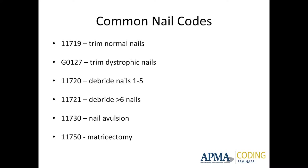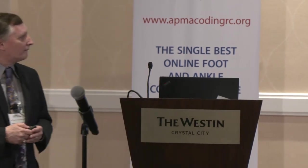You can combine 11720, which says I'm debriding at least one mycotic nail, with 11719 or G0127. You can combine those on that patient, but they need different diagnoses. You use a dystrophic nail diagnosis for G0127 and 11719, and a mycotic nail diagnosis for 11720, because that's paying you for up to five nails while you've still got five others you're trimming. You can combine 11720 and 11719, or 11720 and G0127. You cannot combine 11721 with any of the trimming codes, because 11721 is paying you for all ten nails.